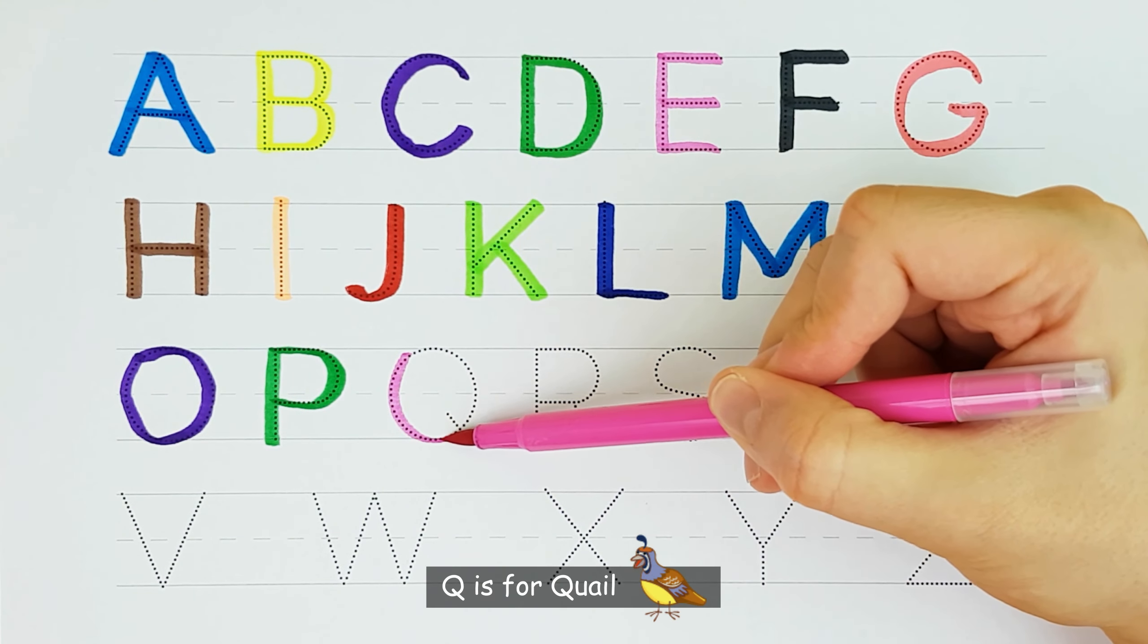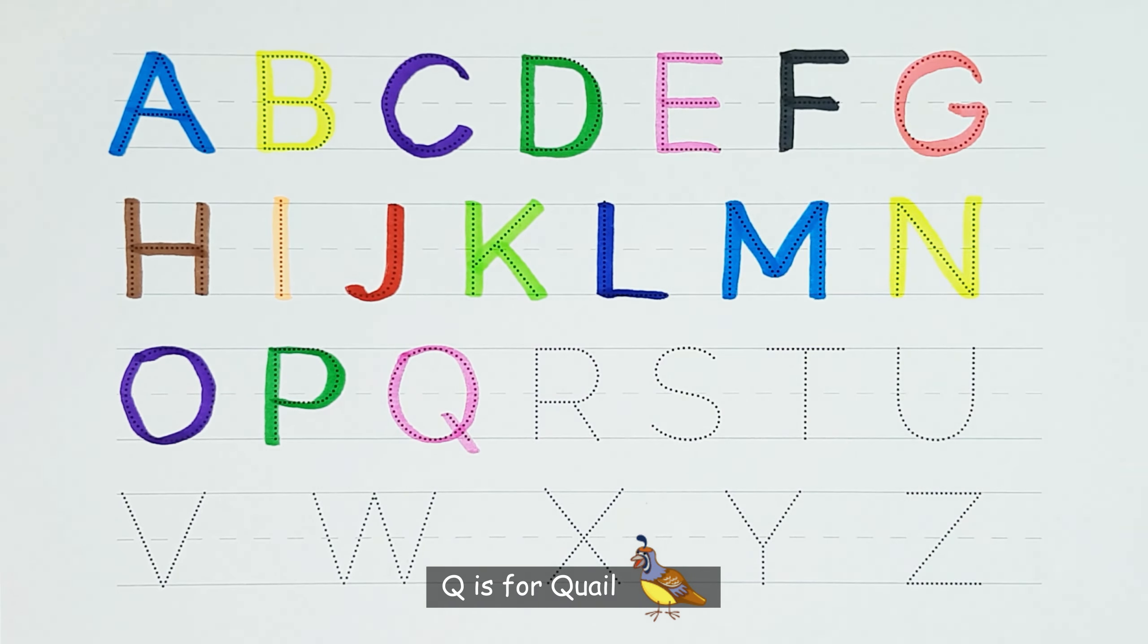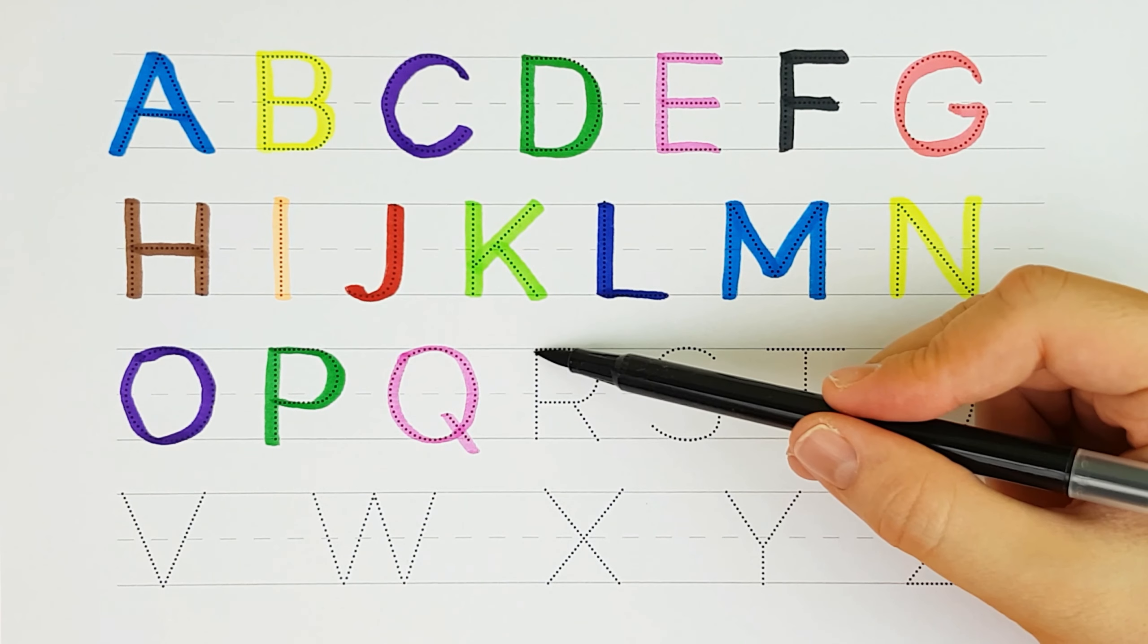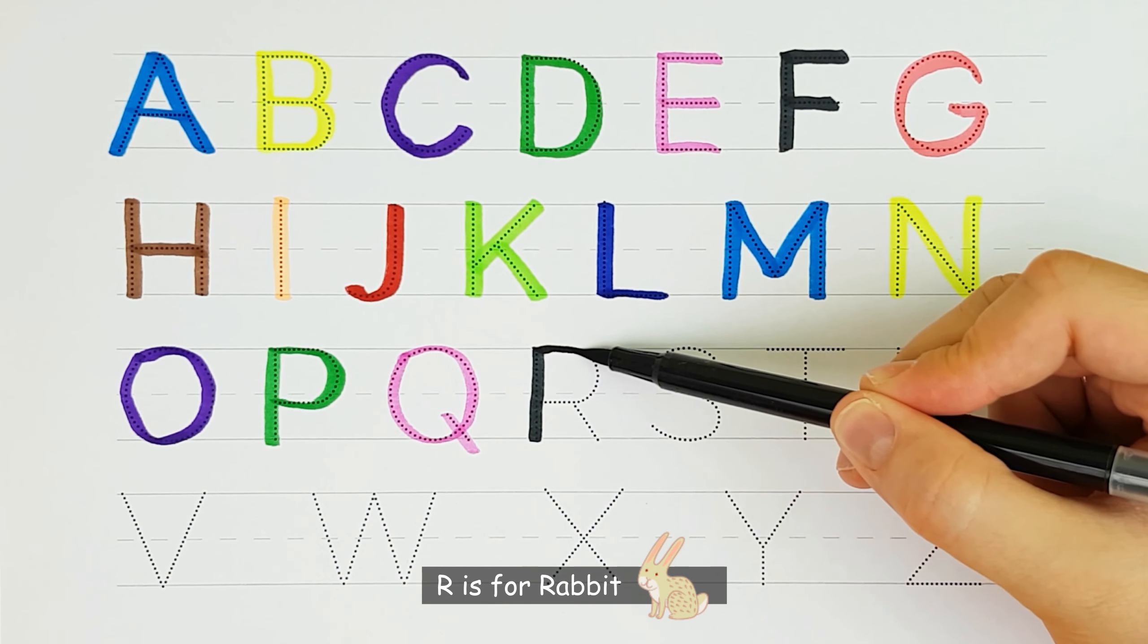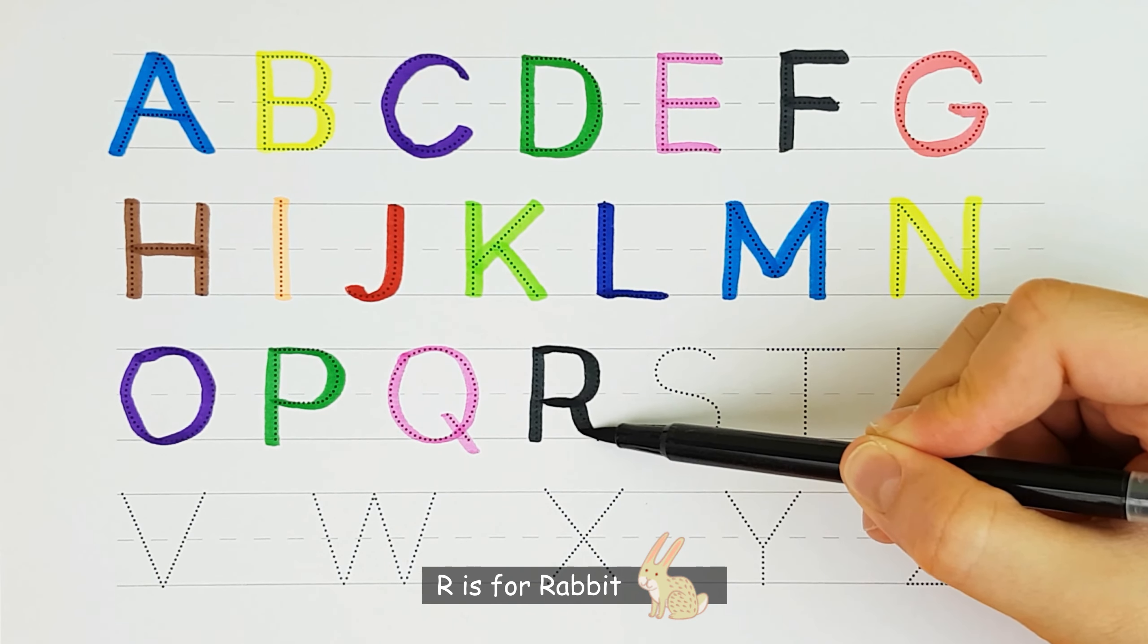Q. Q is for quail. Q. R. R is for rabbit. R.